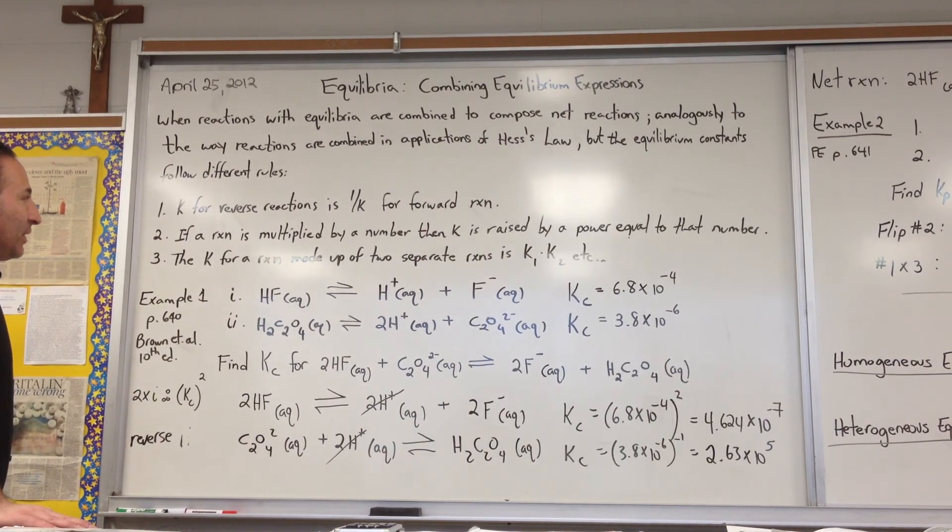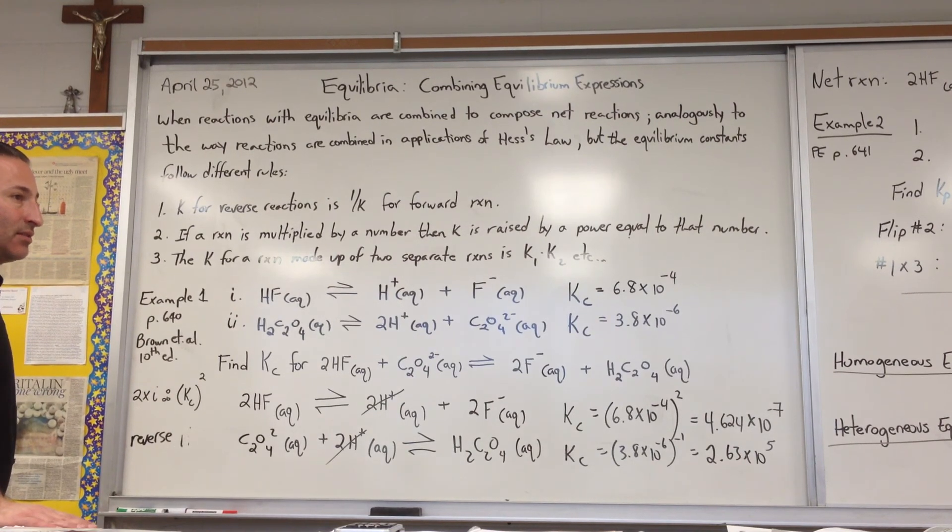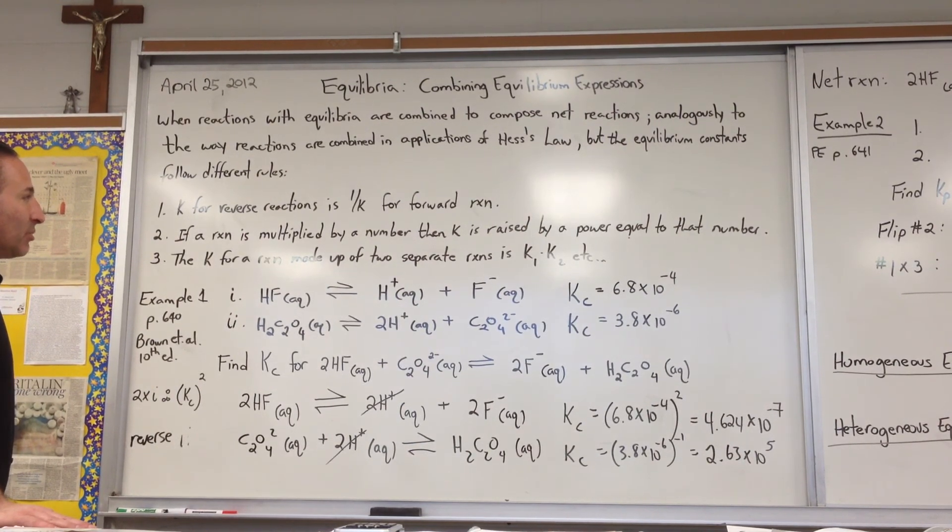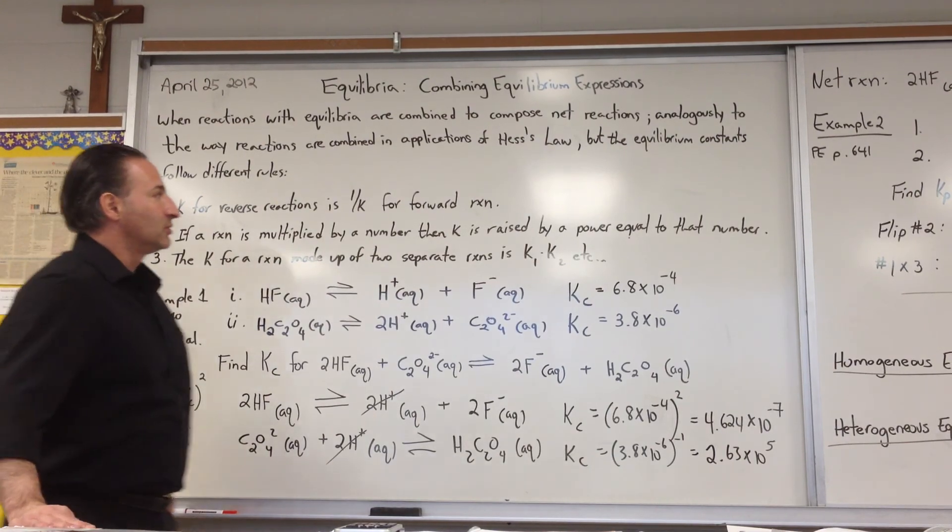Normally when you add reactions in Hess's law, you add the values of enthalpy. But in the case of equilibrium constants, there are three rules that you would apply. For reversing the reactions, you take the reciprocal of the reactions.